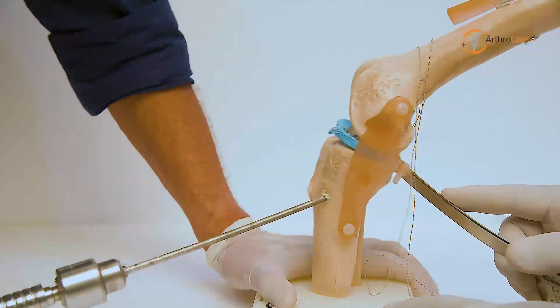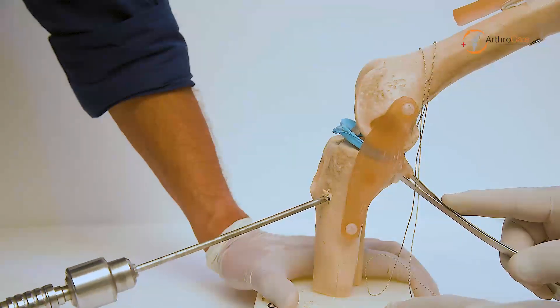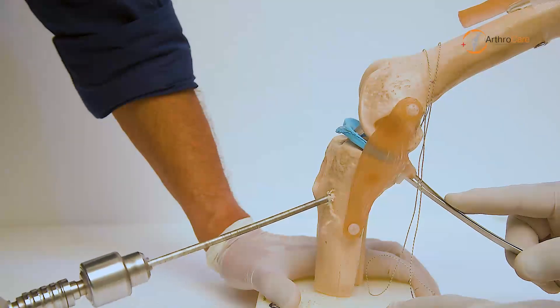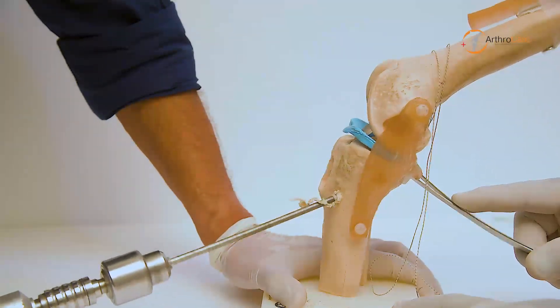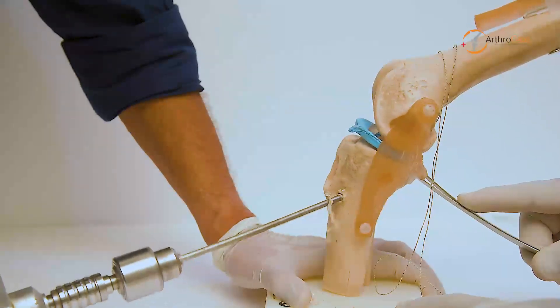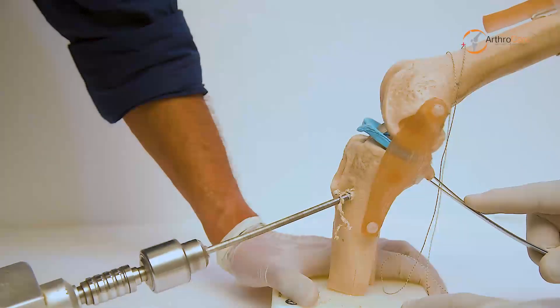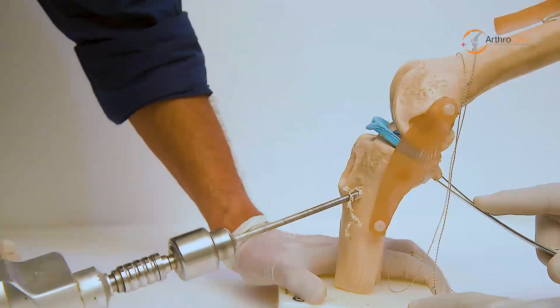Remove the jig and overdrill with the EndoButton drill bit. You can see the tip of the guide pin is at the apex of the crater of the fracture fragment. I am overdrilling the guide pin with the EndoButton drill bit through and through.